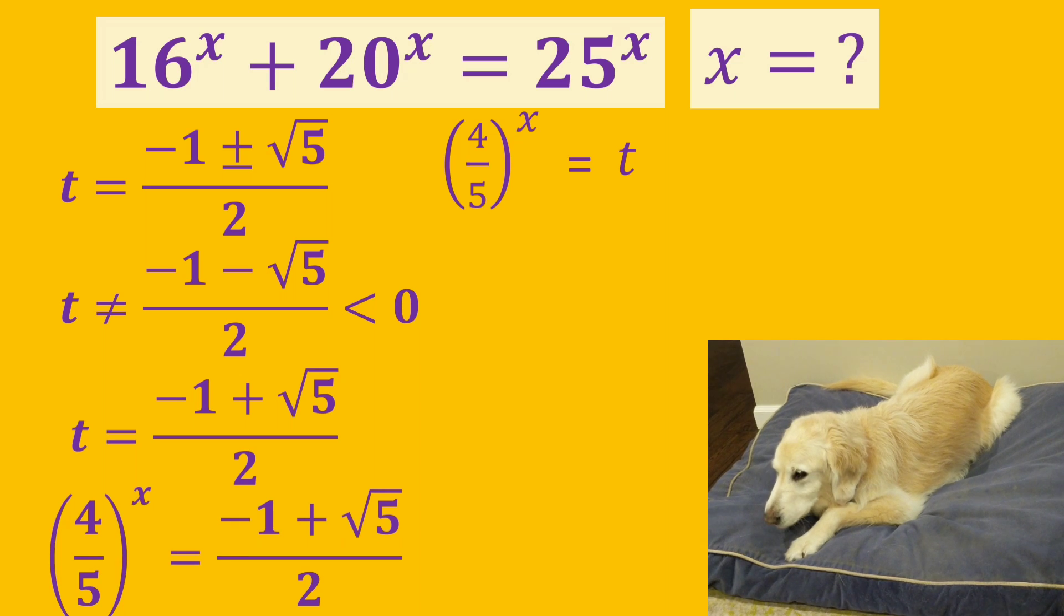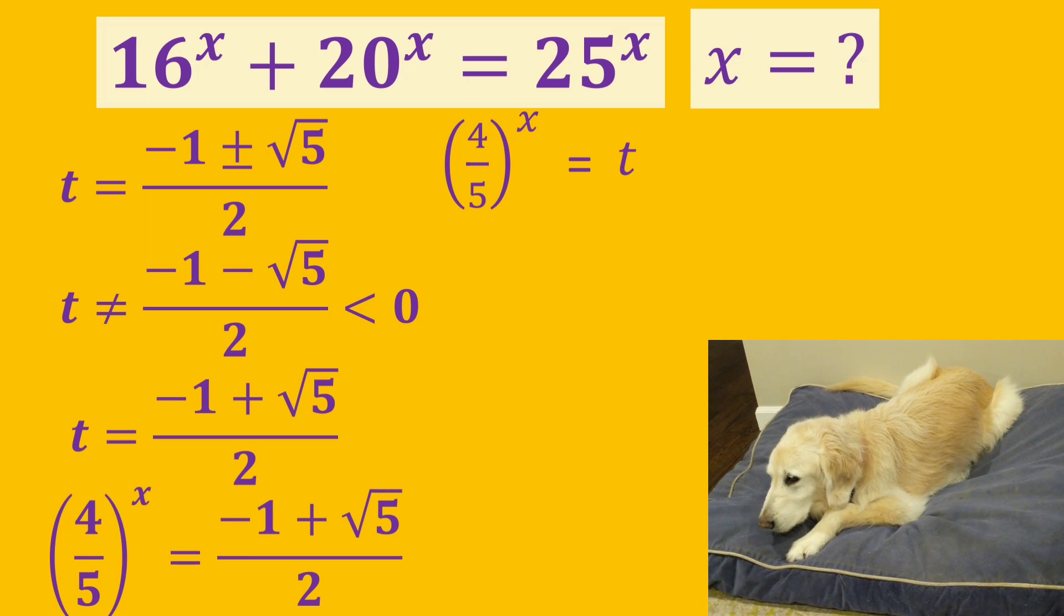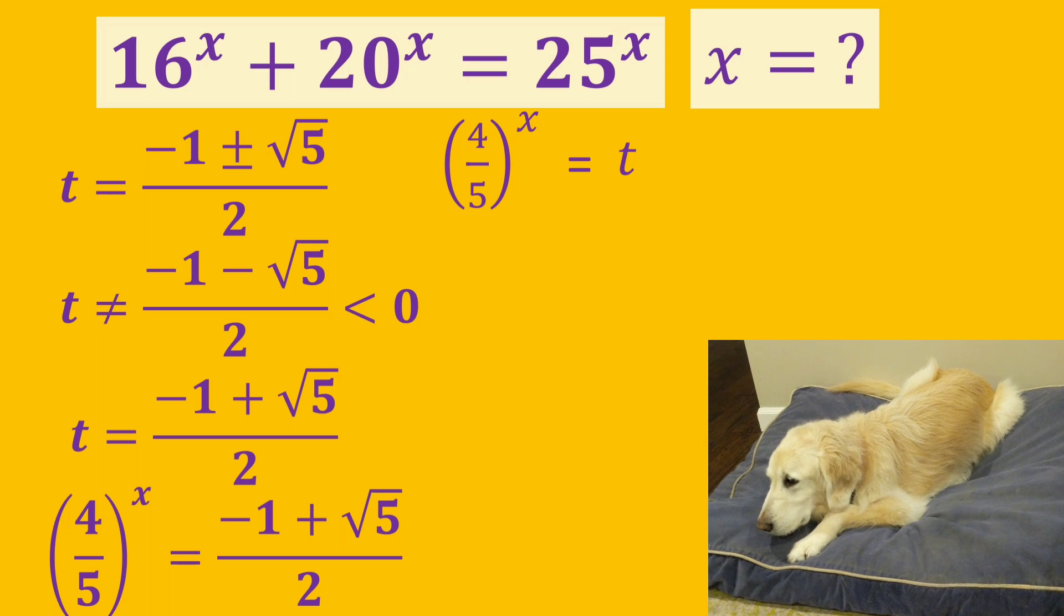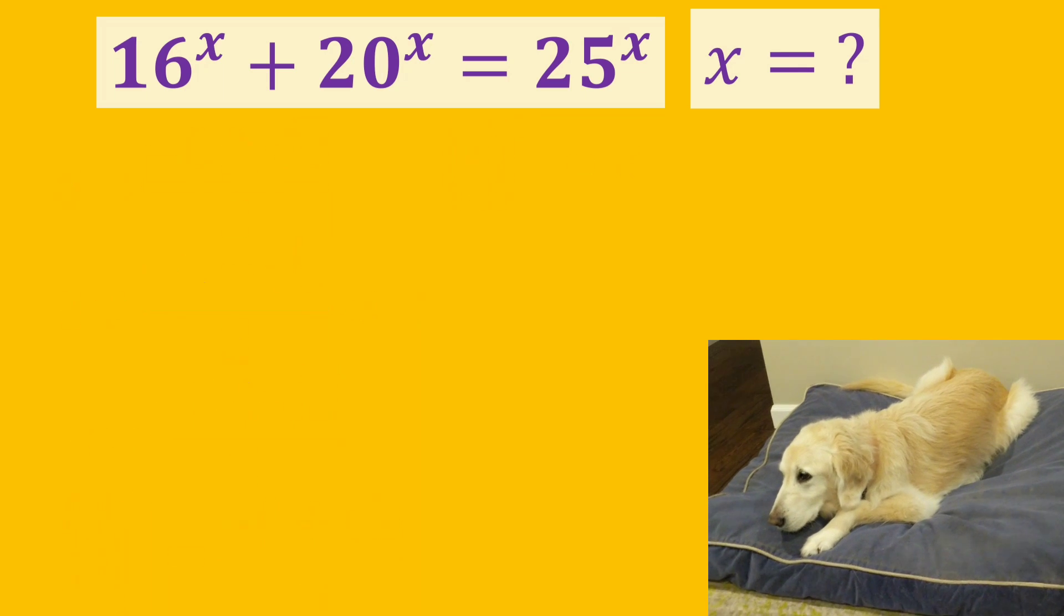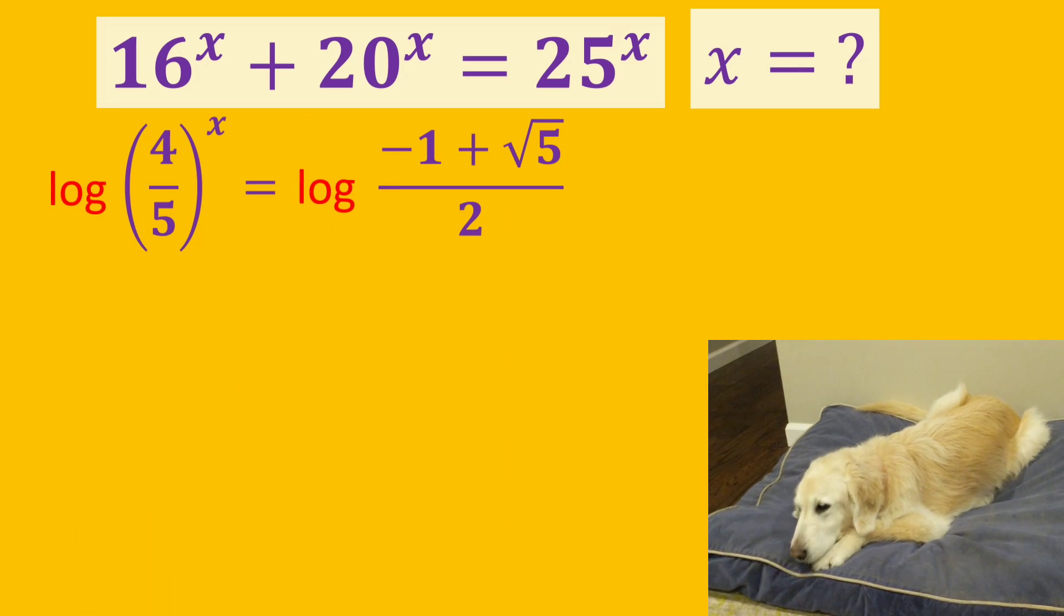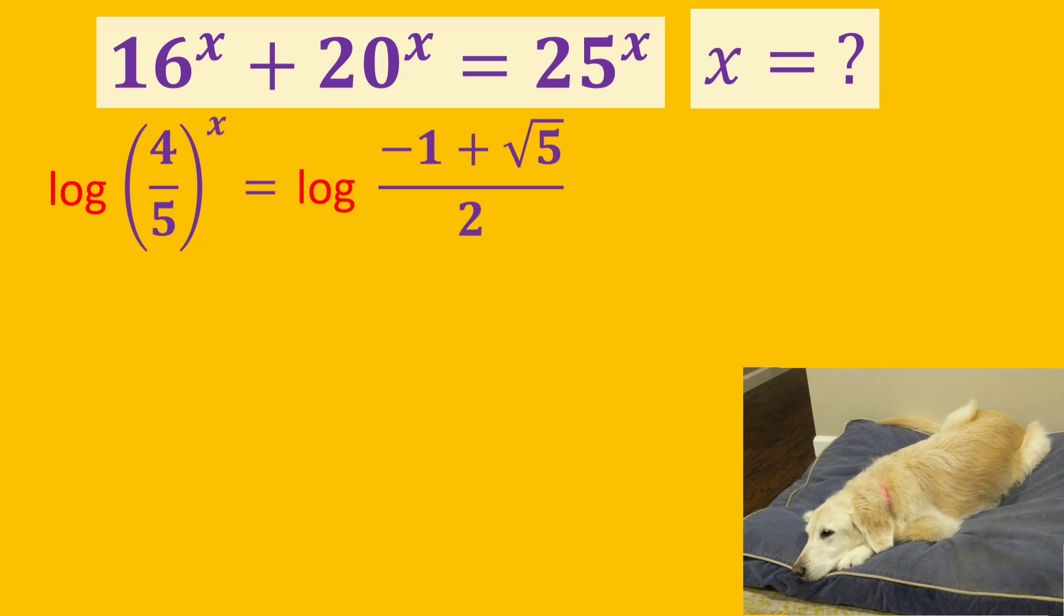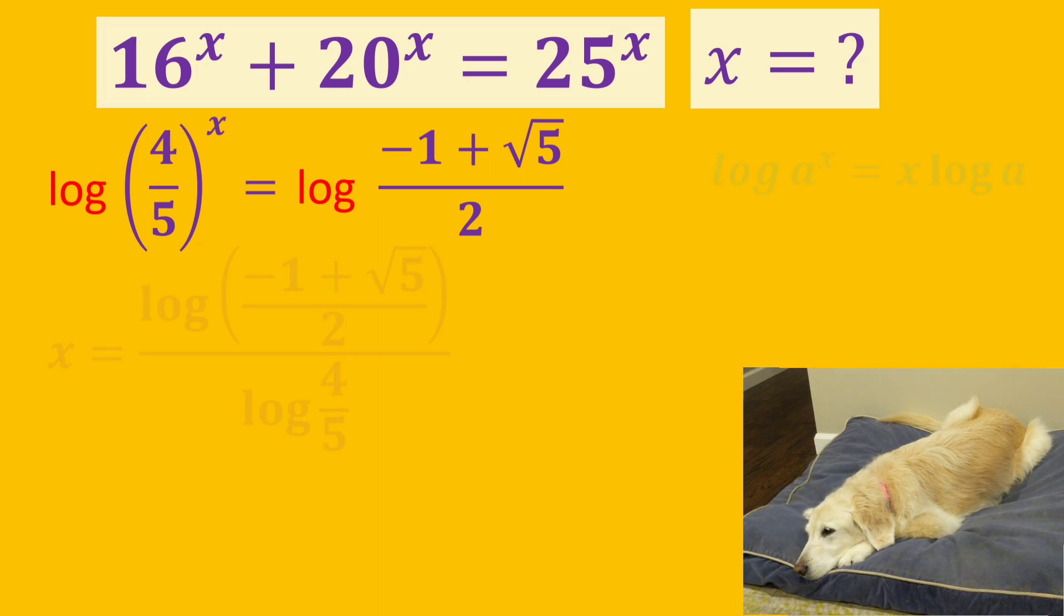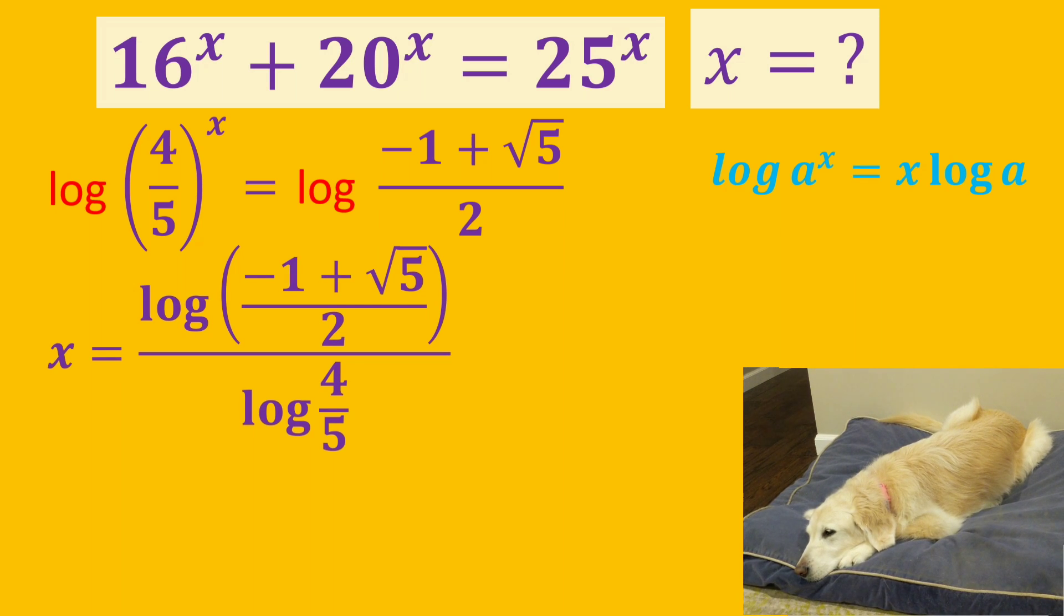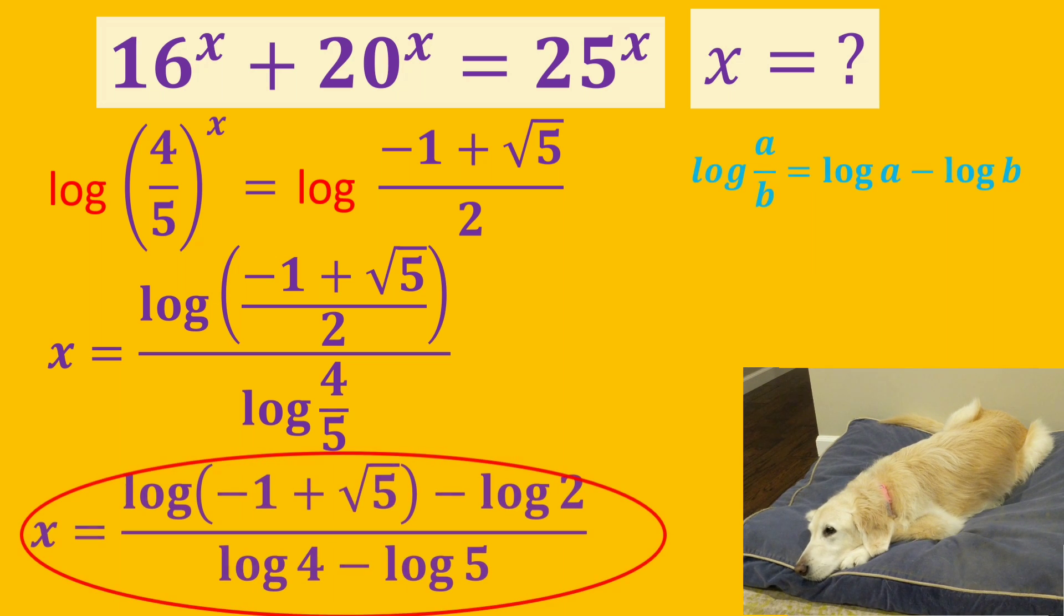So, we can equate 4 over 5 to the power of x to minus 1 plus square root of 5 all over 2. Here, we need to use the logarithm. We will apply this logarithm rule to find x. And, we found our answer.